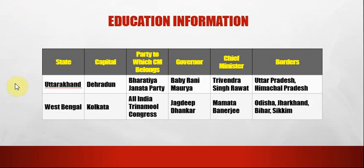The next state is Uttarakhand. The capital of Uttarakhand is Dehradun. The party to which the CM belongs is Bharatiya Janata Party. The governor is Baby Rani Maurya. The borders are Uttar Pradesh and Himachal Pradesh.